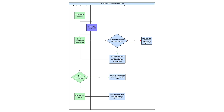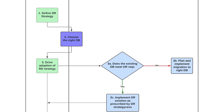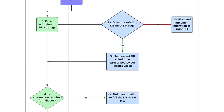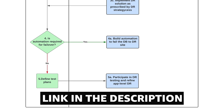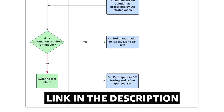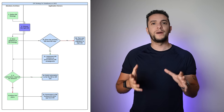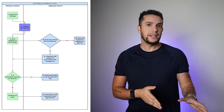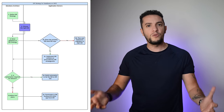Let's look at this swim lane diagram showing the high-level tasks associated with defining and implementing a disaster recovery strategy for databases on AWS. You can download this PNG file — just check the link in the description. On the left, we find tasks that should be owned by the solutions architect, and on the right are the ones that should be driven by the application owners.